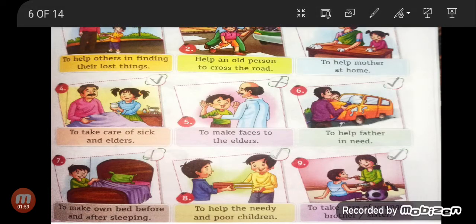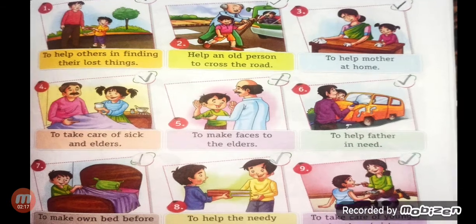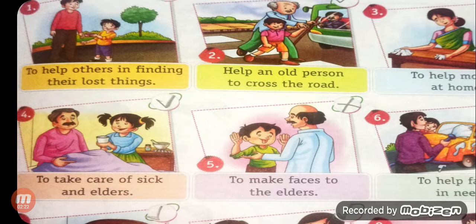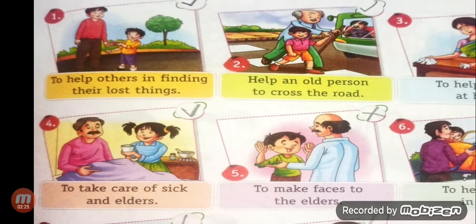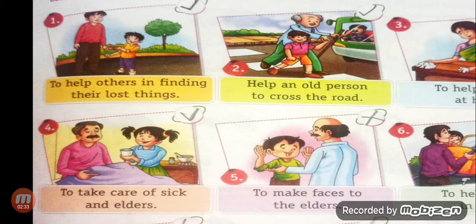In this lesson number 3, chapter number 1, page number 3, put a tick for the things you should do and a cross for the things you should not do. This chapter is Being Good. Some qualities are shown by pictures and you have to tick or cross. Number 1: to help others in finding their lost things — is it a good quality? Of course, you are good. So, tick the correct sign.